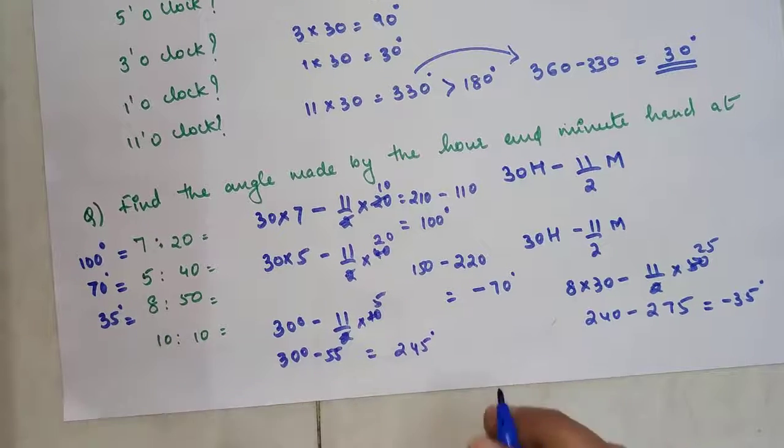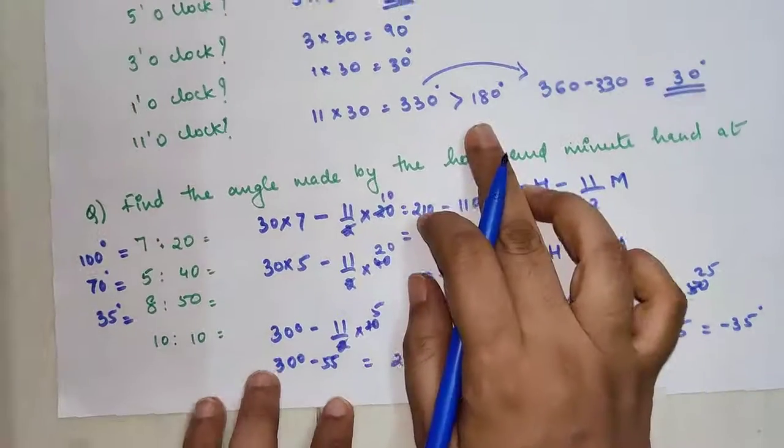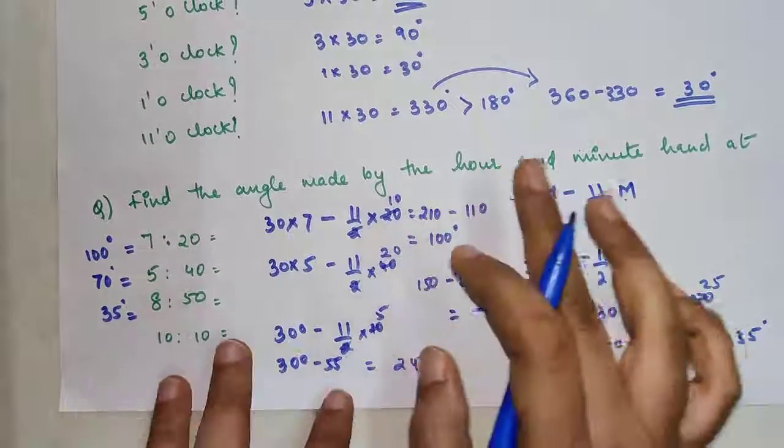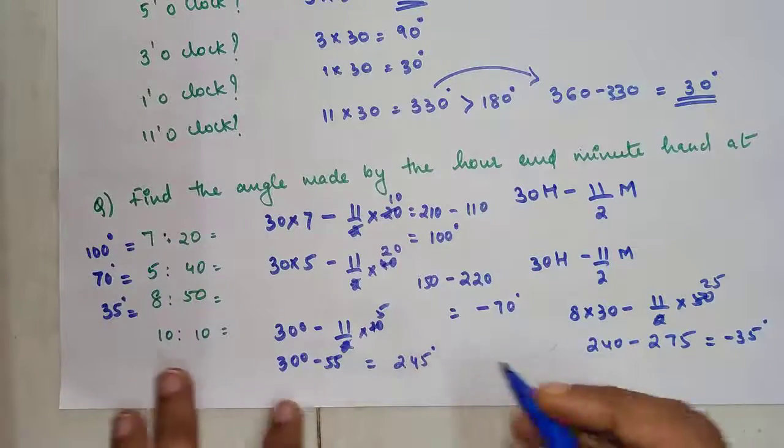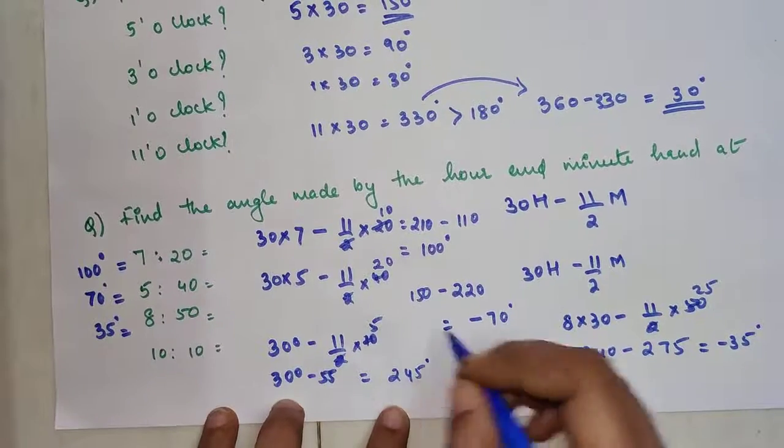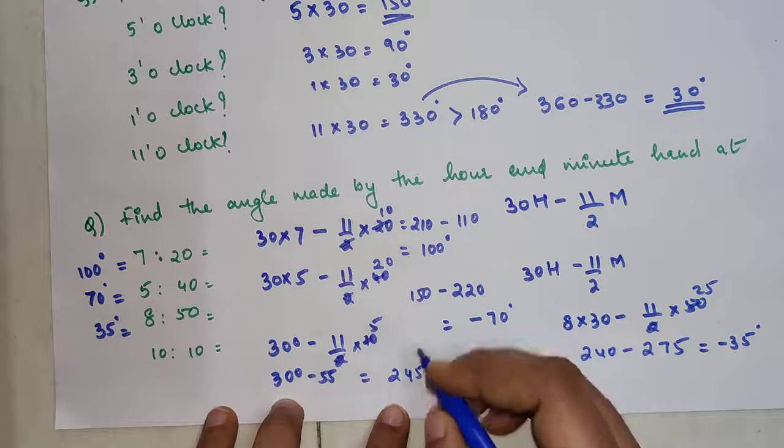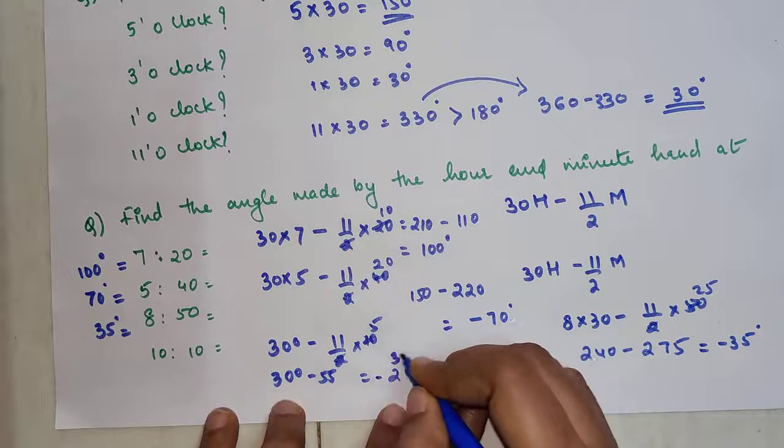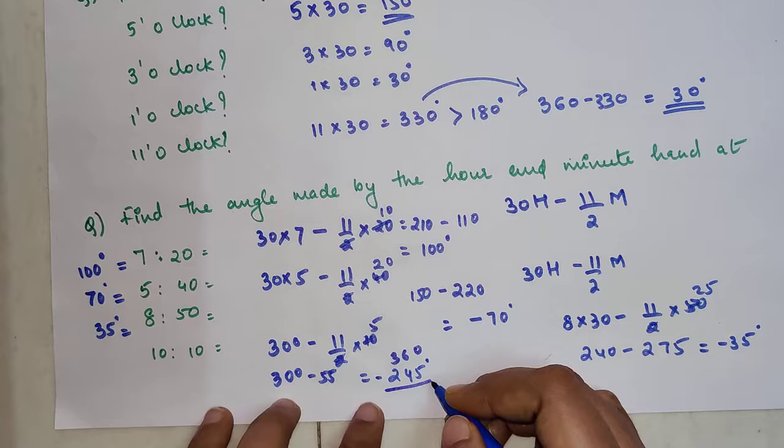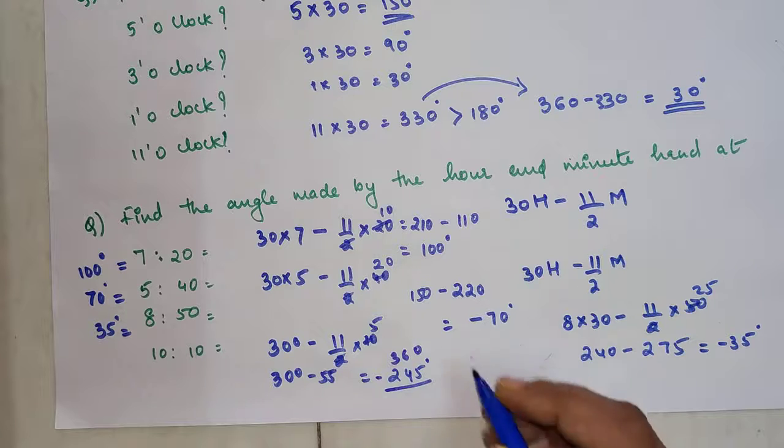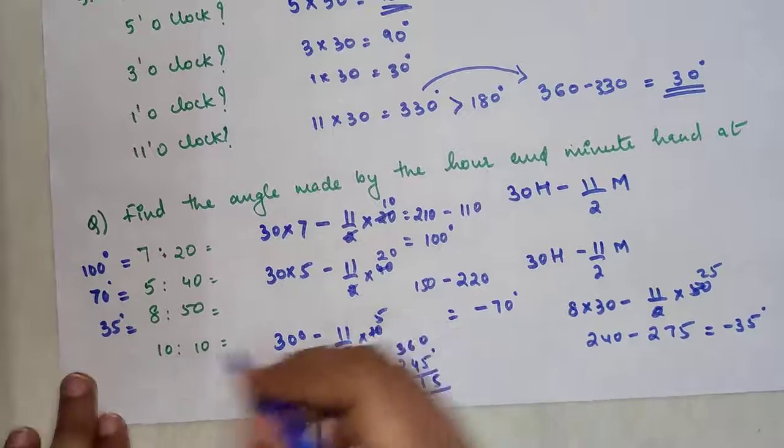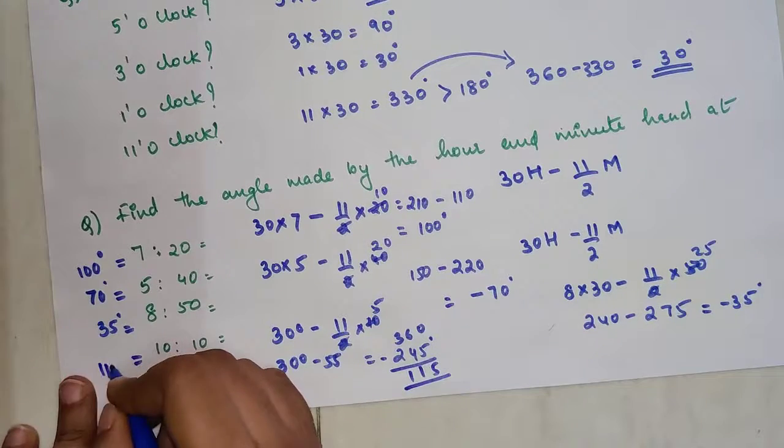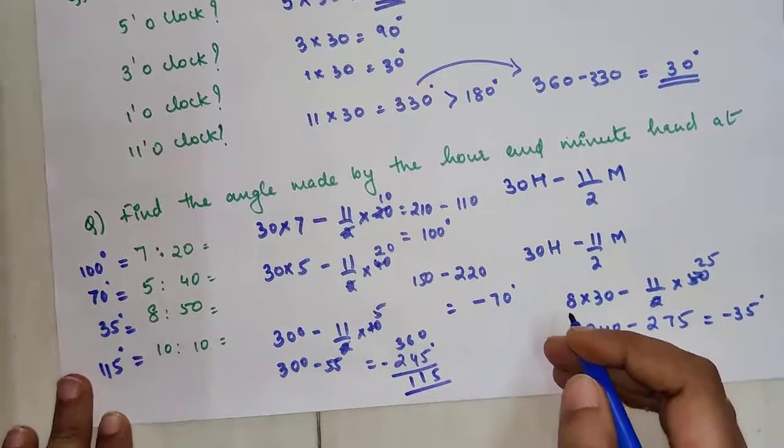Now please understand, 245 is way ahead than 180. Please understand, this particular rule will suffice to any of these calculations. So 245, when it is greater than 180, all you have to do is subtract 245 from 360. So your answer now changes to 115. So for this one your answer is 115 degrees.